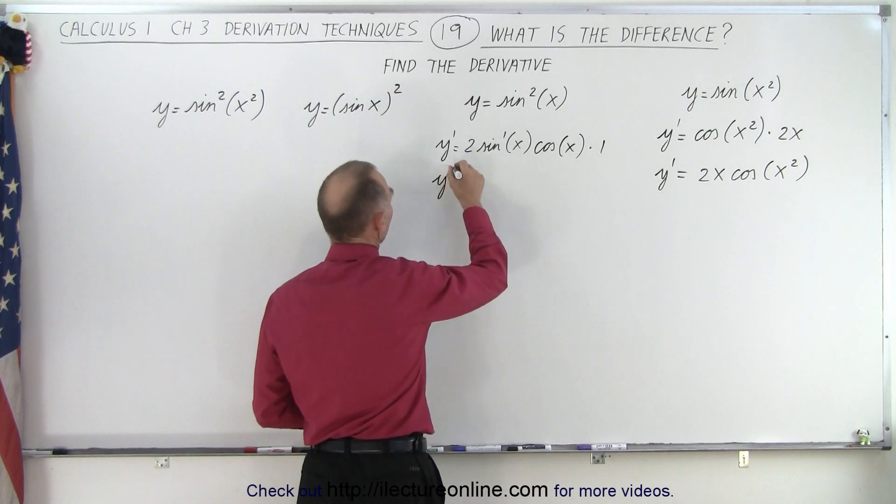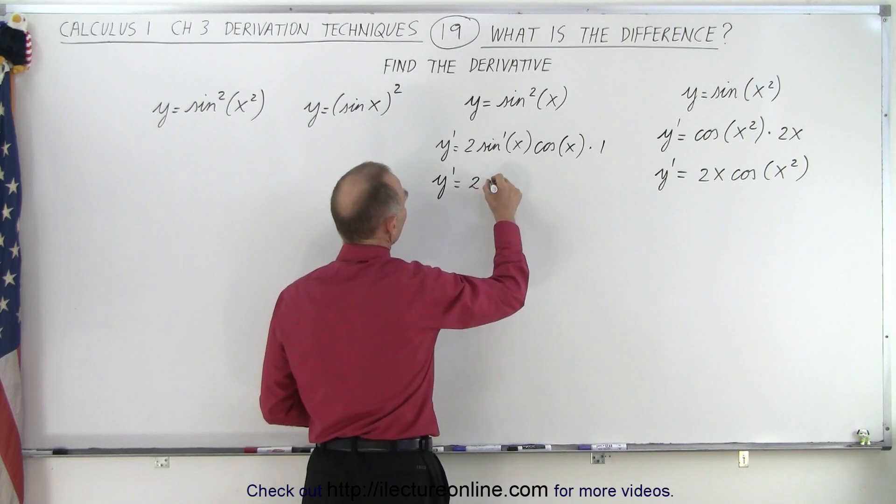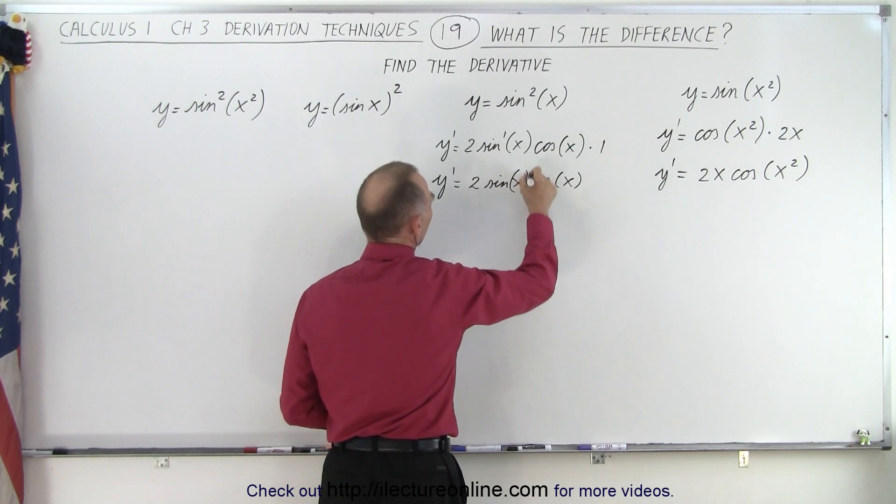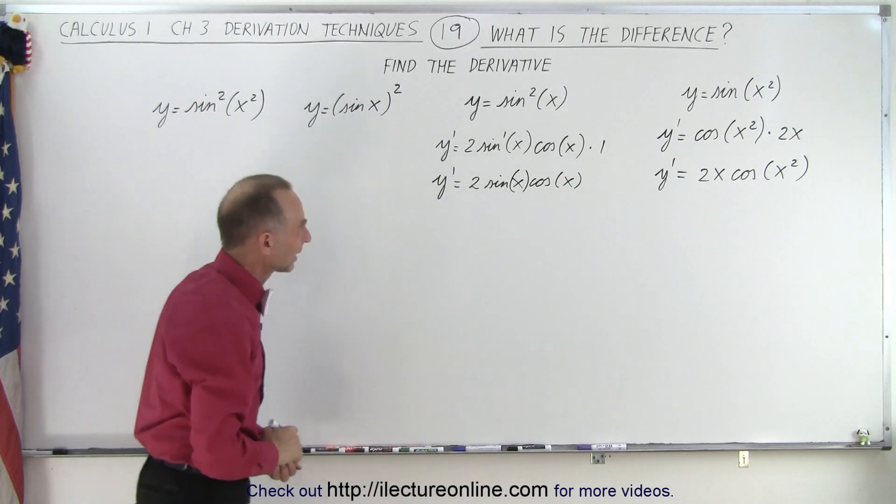And so therefore, we get y prime is equal to 2 times the sine of x times the cosine of x. And sometimes I put parentheses around it to make that a little bit cleaner.